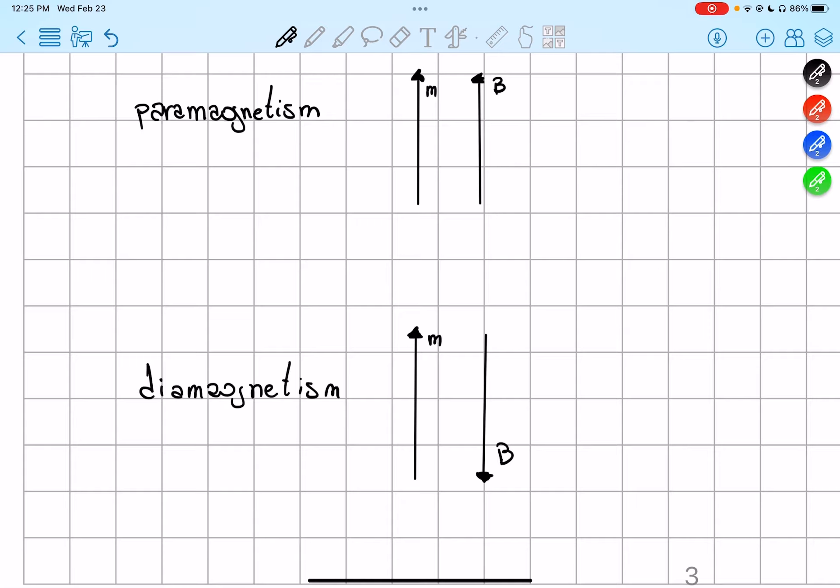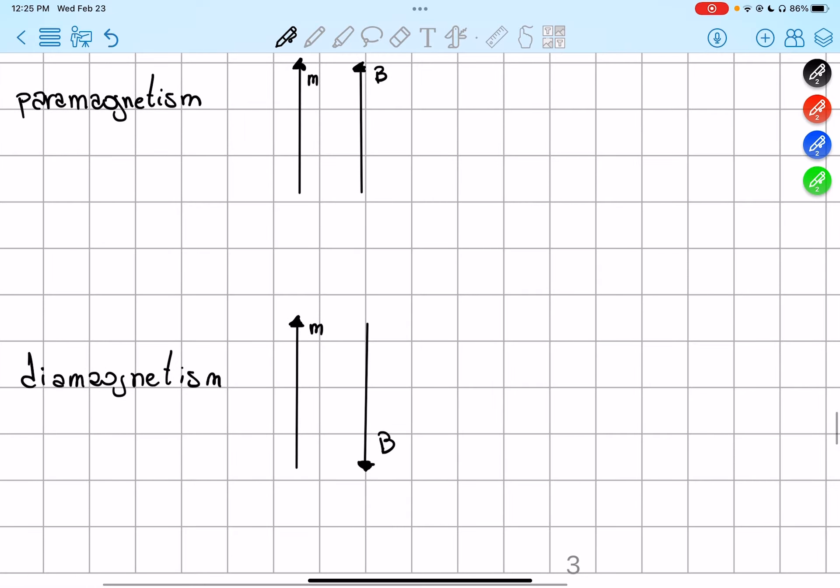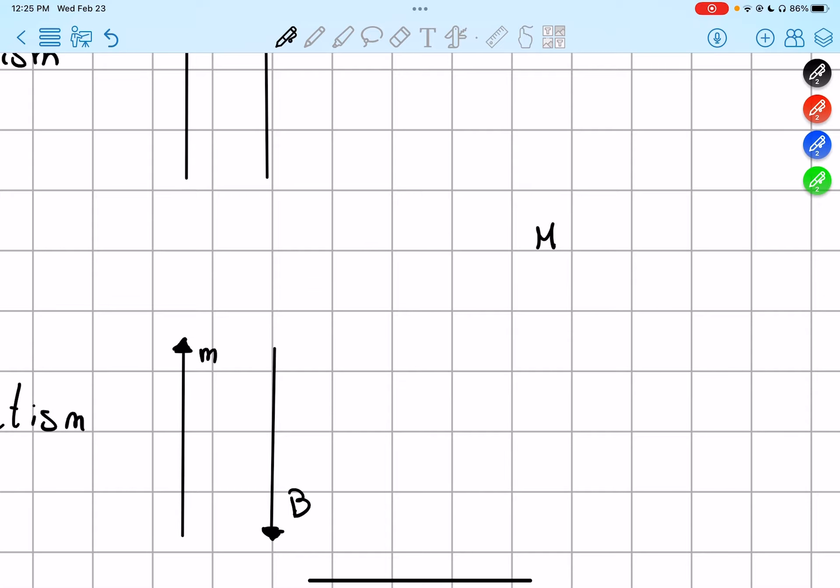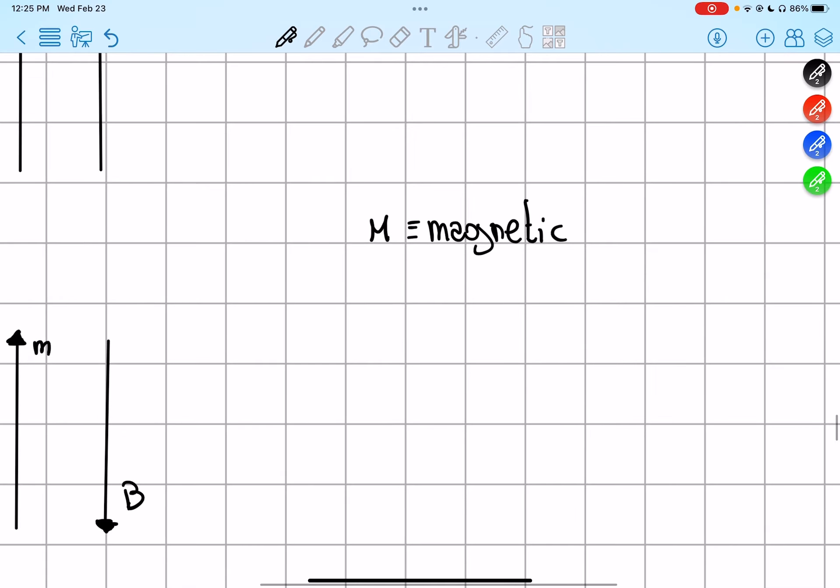We talk about magnetization, and actually there is a quantity called M, that is the magnetic dipole moment per unit volume. So it means how much magnetic dipole moment per unit volume.